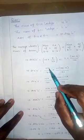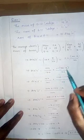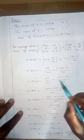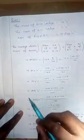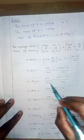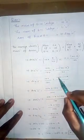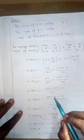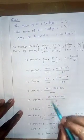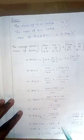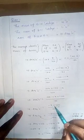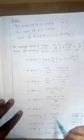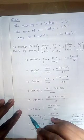Expanding: 11 multiplied into the bracket gives 1100 minus 11x. So the numerator becomes 10x + 1100 minus 11x, all over 100. Combining like terms: 10x minus 11x gives minus x, so we have (1100 minus x)/100 = 10.804. Rearranging, we multiply both sides by 100: 1100 minus x = 10.804 × 100.